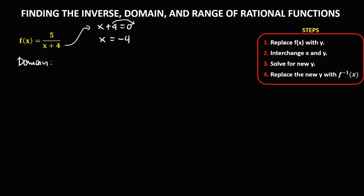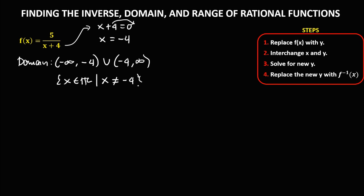If the denominator of a rational function is equal to 0, then the function is undefined. So the domain is from negative infinity to negative 4, union from negative 4 to positive infinity — all real numbers except x equals negative 4, or the set of all x elements of real numbers such that x is not equal to negative 4.